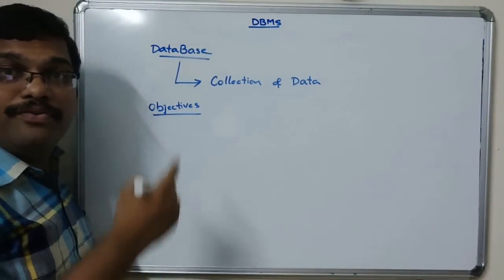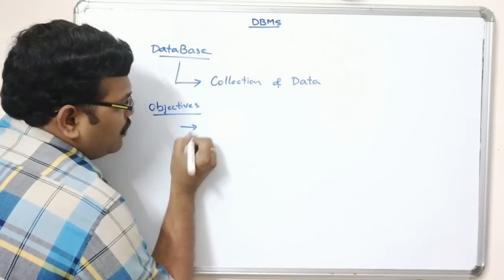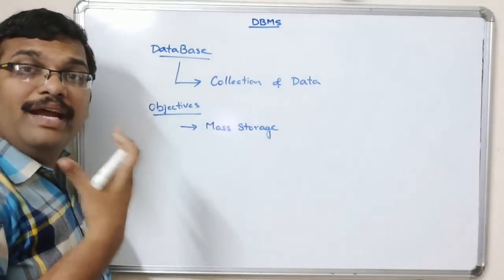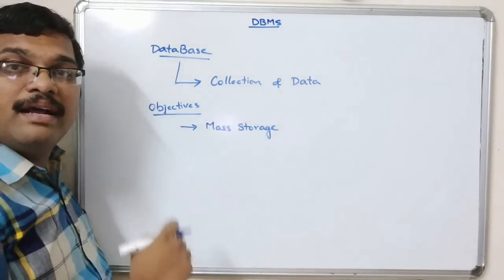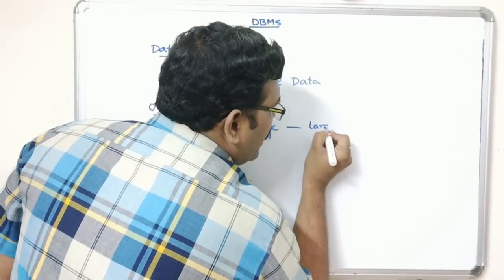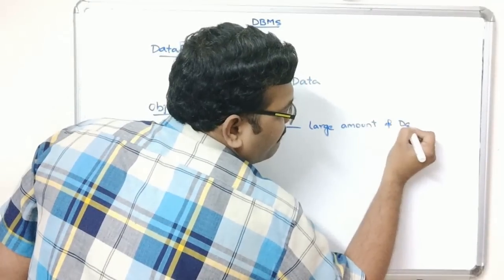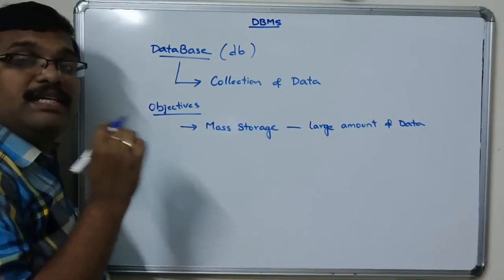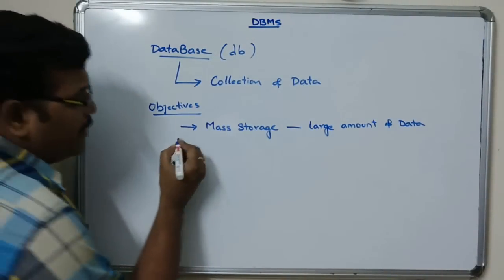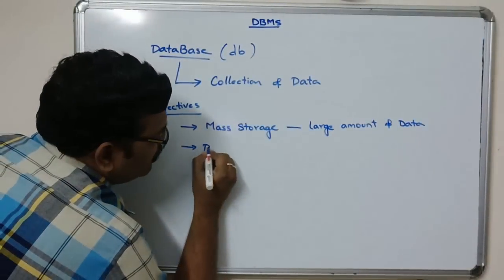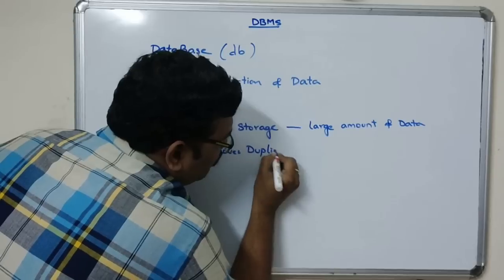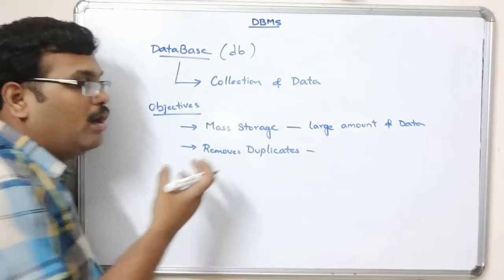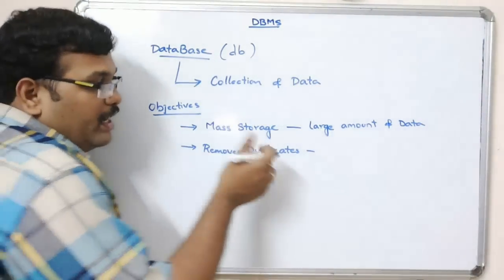The main objectives of DBMS: the first one is mass storage — a large amount of data can be stored at a single place, which we call a database. It can accept a large amount of data. This database can also be represented as DB. The next objective is it removes duplicates — if duplicates occur, the database will remove all of them.